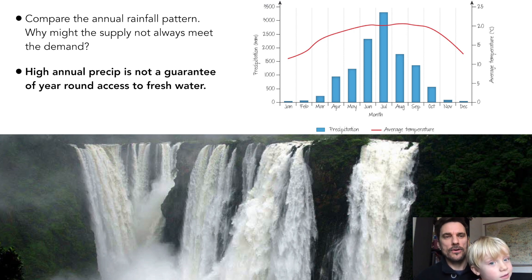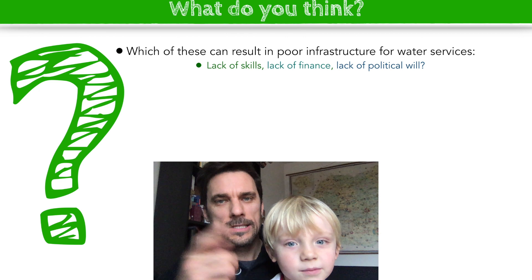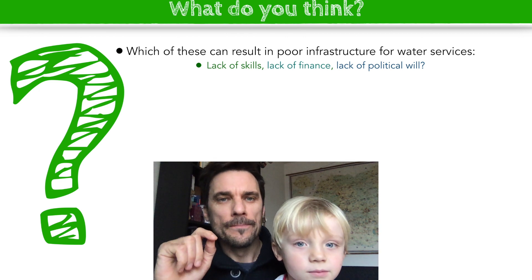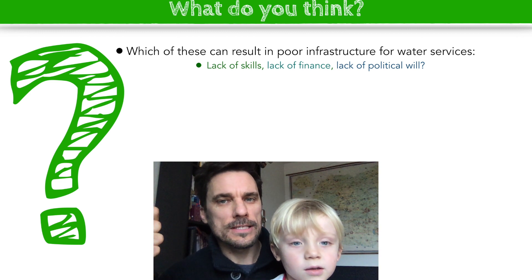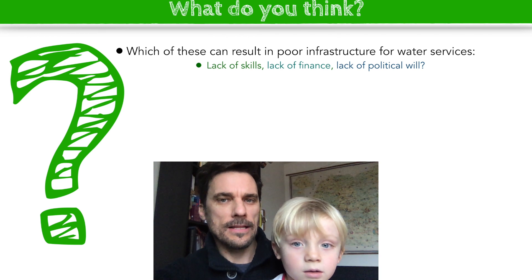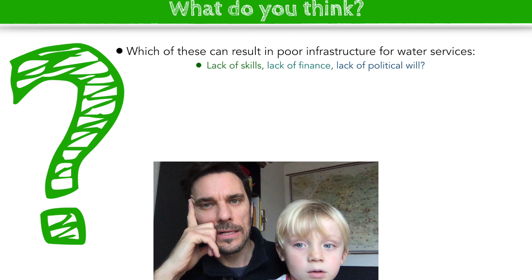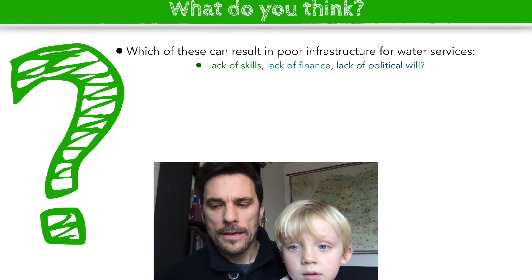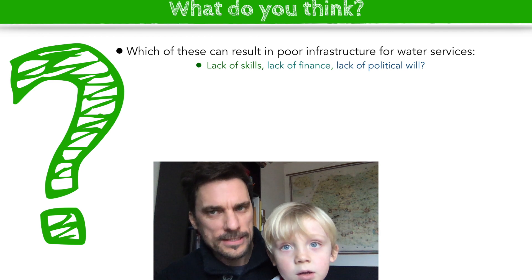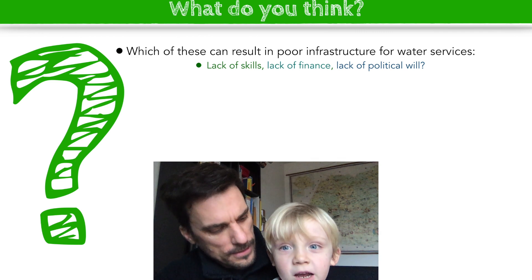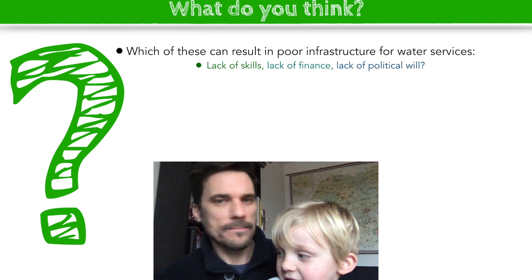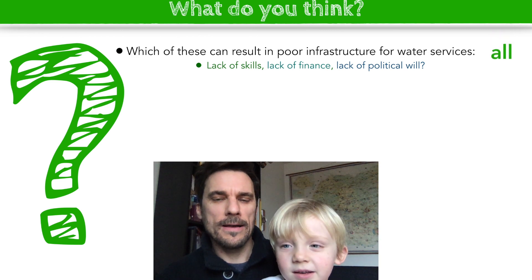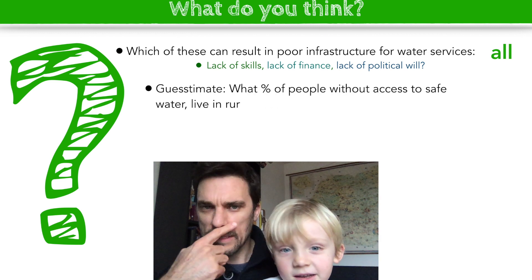Here's a question - think about it: which of these can result in poor infrastructure for water services? Is it lack of skills, lack of finance, or lack of political will? Take a second and think. It's a trick question - the answer is all of them: lack of skills, lack of finance, and lack of political will all contribute to poor infrastructure for water services.